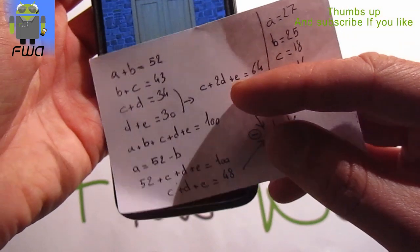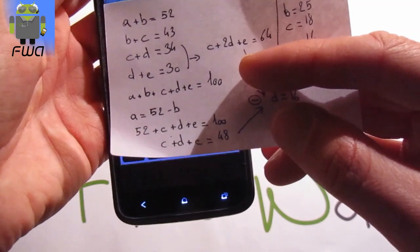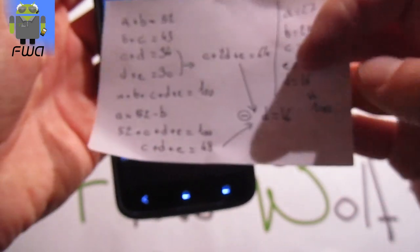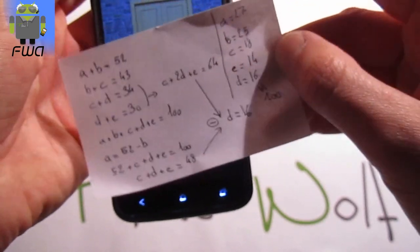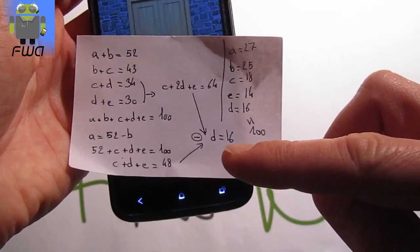Then we can calculate this result with the other one just there. So c plus 2g plus e minus c plus g plus e equals g. And we get g equals 64 minus 48. So we get g equals 16.